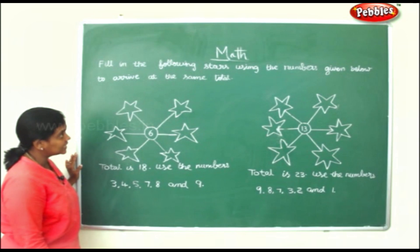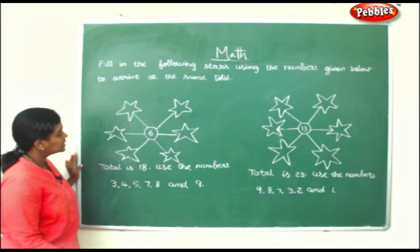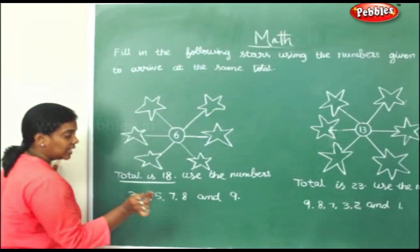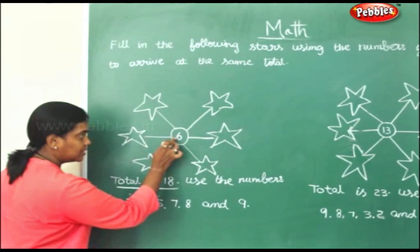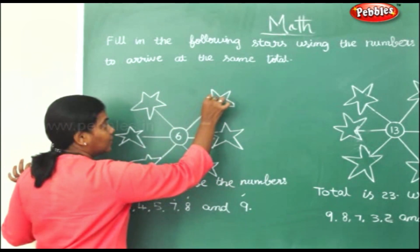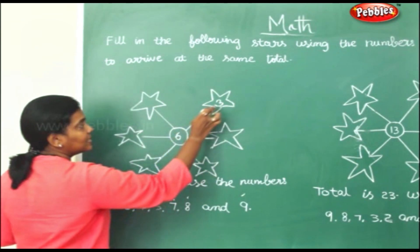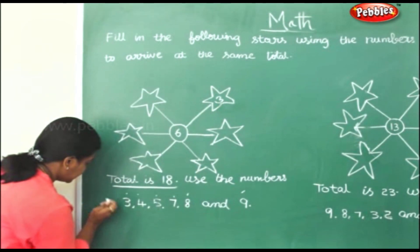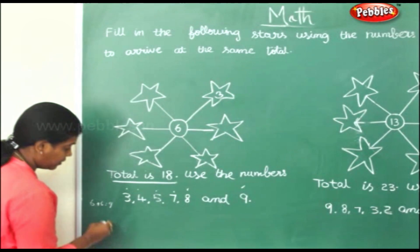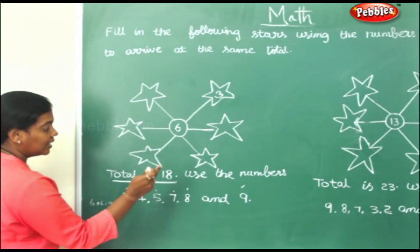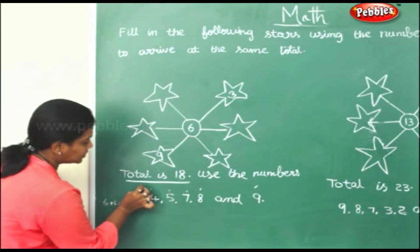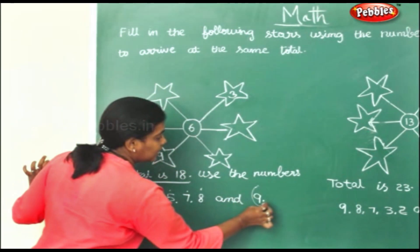Now let us fill in the following stars using numbers given below to arrive at the same total. You have to get 18 as the total. Numbers to use are 3, 4, 5 — 6 is already placed — 7, 8, and 9. I will take the number 3 first. 6 plus 3 is 9, and you have to get 18, so you need another 9. I will use number 9 here. So 3 and 9 are already used.